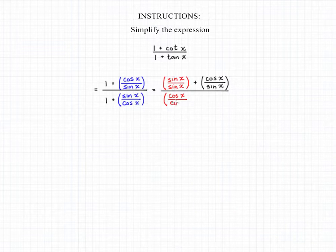In our denominator of our large fraction, we're going to change that one into cosine of x over cosine of x. It's still equal in value to one, but now that fraction has the same denominator as the other fraction so we can add them together.